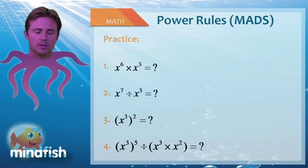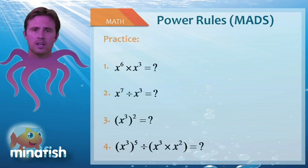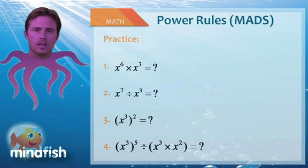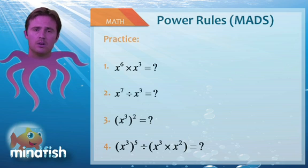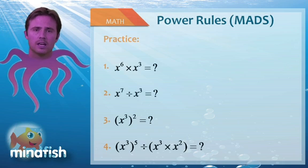And the last one, we have a few steps to do. The first, x to the third raised to the fifth would be x to the fifteenth. And the next one, x to the third times x squared would be x to the fifth. And when we do x to the fifteenth divided by x to the fifth, we would subtract, yielding x to the tenth.